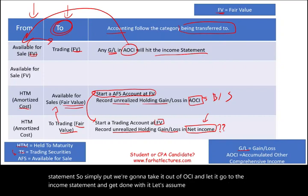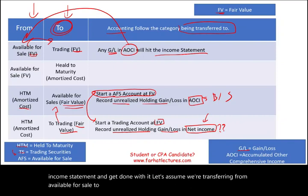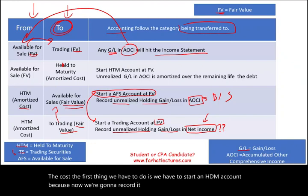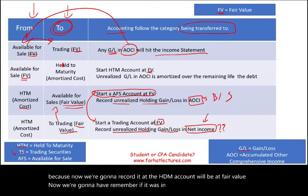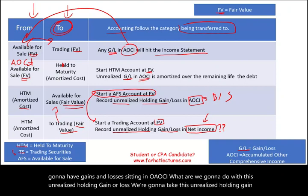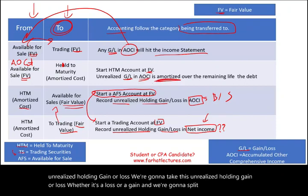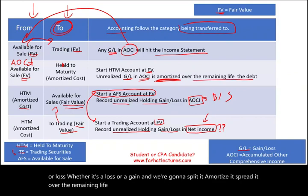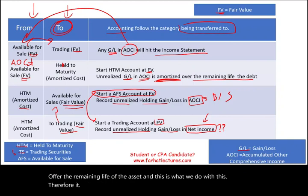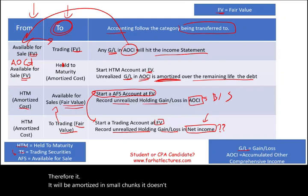Let's assume we're transferring from available for sale to held to maturity — going from fair value to cost. We have to start an HTM account recorded at fair value at the transfer date. Now, any unrealized holding gain or loss sitting in OCI from the available for sale period — we are going to take that unrealized holding gain or loss and amortize it, spreading it over the remaining life of the debt. It doesn't hit the income statement all at once.